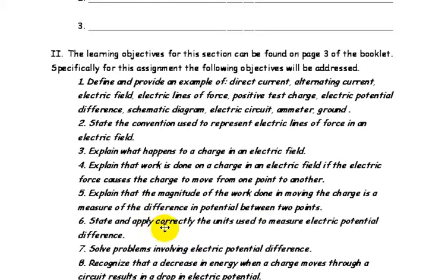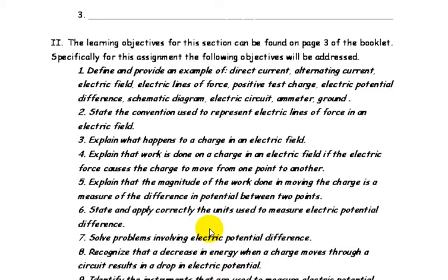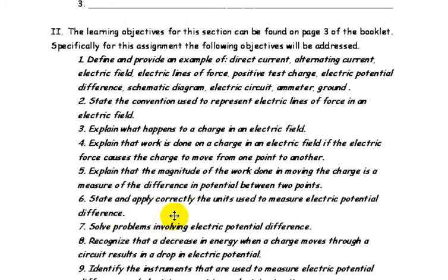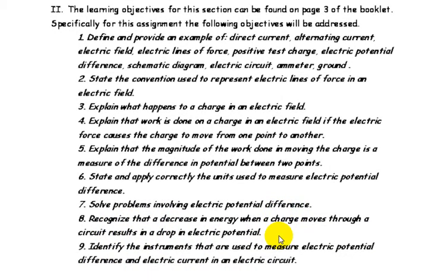Five, we'll explain that the magnitude of work done in moving the charge is a measure of the difference in potential between two points. Six, state and apply correct units used to measure electric potential difference. Seven, solve problems involving electric potential difference. Eight, recognize that a decrease in energy when a charge moves through a circuit results in a drop in electric potential.